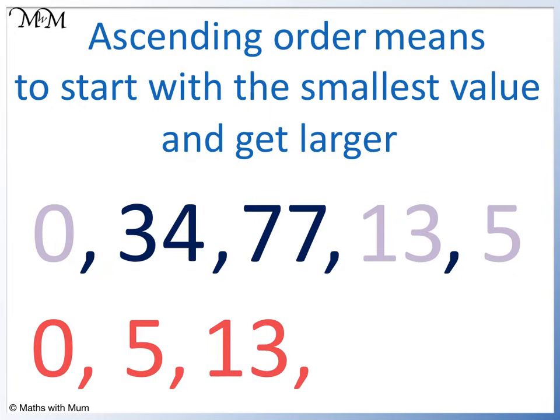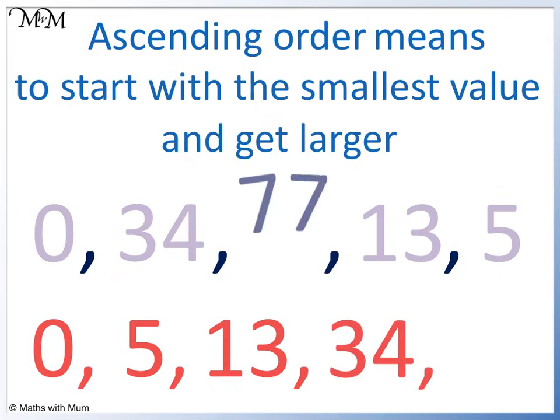The remaining numbers are bigger than 20. Out of 34 and 77, 34 is now the next smallest, which leaves 77 as the largest number.